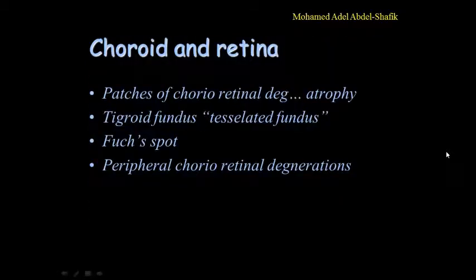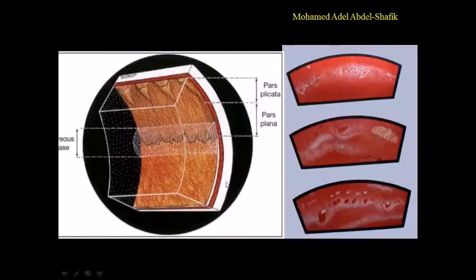Another example of problems is peripheral choroidal degeneration. Peripheral means very anterior. This is the ora serrata, this is the ciliary body. So changes occur here very anterior, very peripheral in the retina. It can take this form, we call it lattice degeneration. It can be patches of atrophy and the problem if it is associated with holes, very thin melting out of the retina.